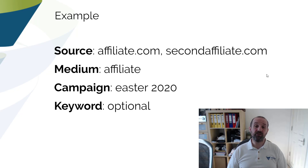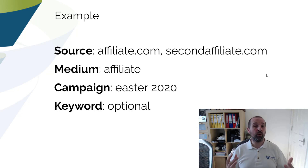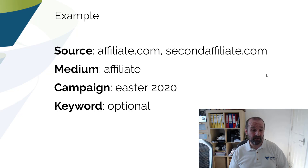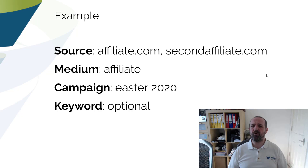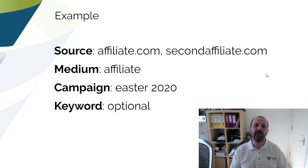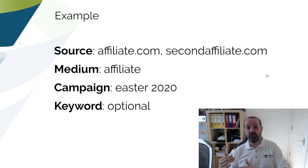The campaign name is entirely up to you. For example, you might have an Easter 2020 campaign running across multiple channels — your Google Ads display campaigns, email campaigns, and affiliate campaigns. You could create a campaign across multiple channels where all the different mediums and sources share a common campaign tag. That means you can look at all traffic and all sales or leads from that campaign across all channels, then subdivide it by individual channel, source, or medium.